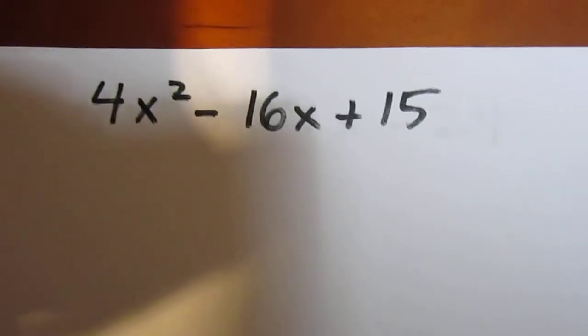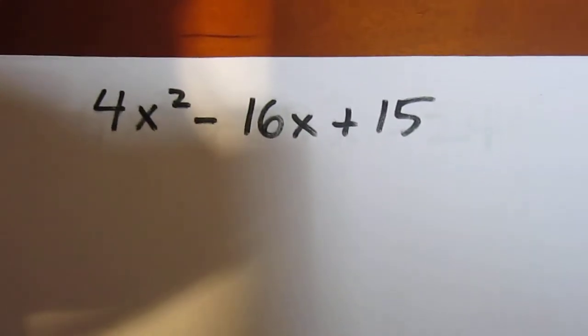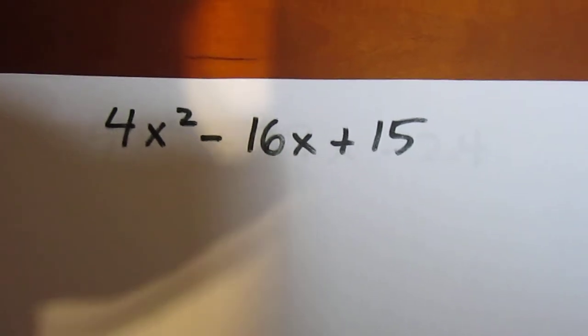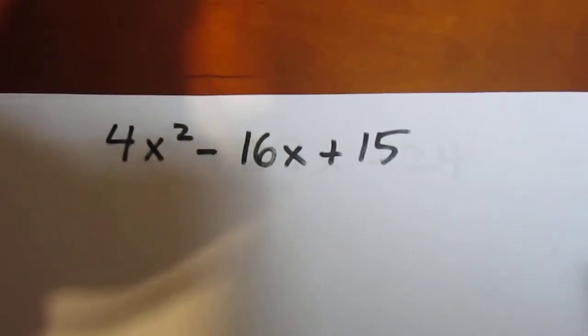For our next question, we're going to try trial and error with 4x squared minus 16x plus 15. Now, with 4x squared minus 16x plus 15...